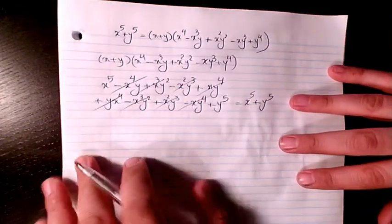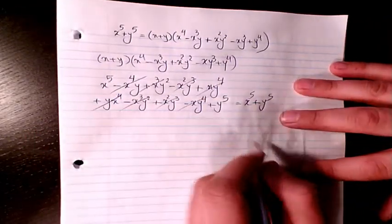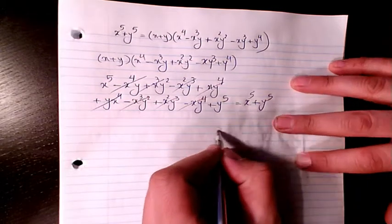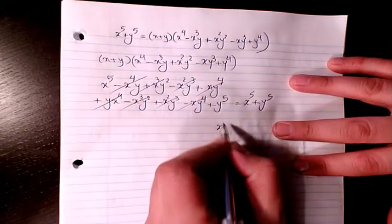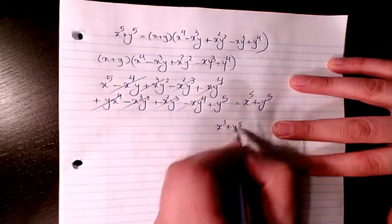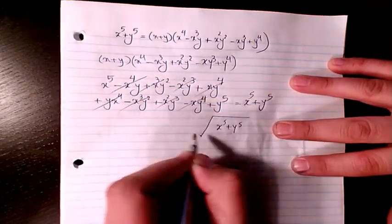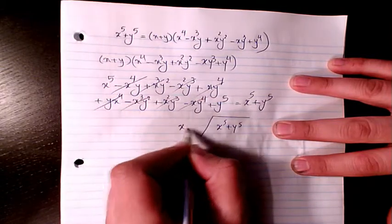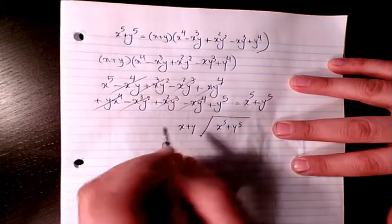Now I can also divide it. So I can have x to the power of 5 plus y to the power of 5 divided by x plus y.